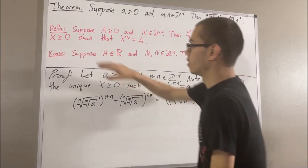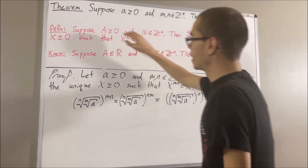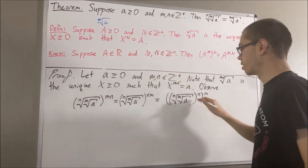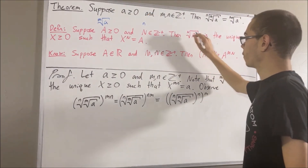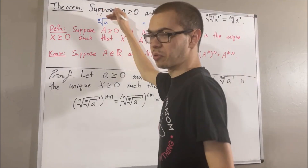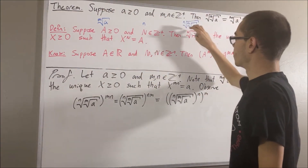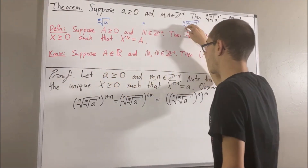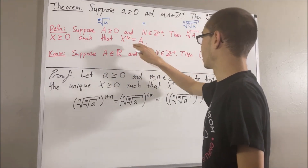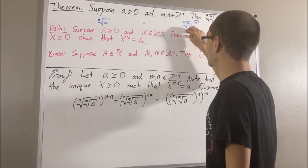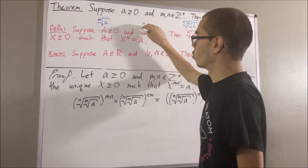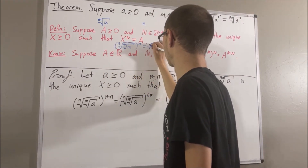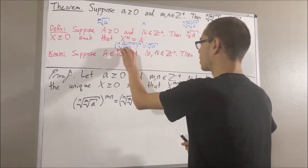So the result should be the nth root of a. To see how that's actually the case, let's look at our definition. We're going to take capital A to be the nth root of a, and capital N to be n. Then the nth root of the nth root of a is the unique real number greater than or equal to zero such that if we take it and raise it to the power of n, we get the nth root of a. So this expression is equal to the nth root of a.